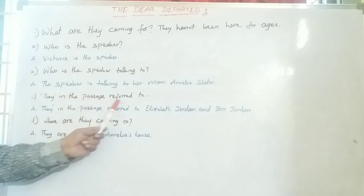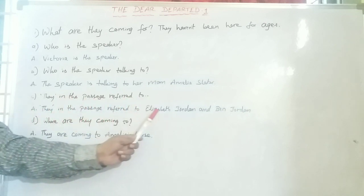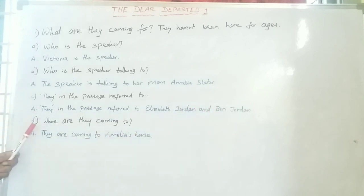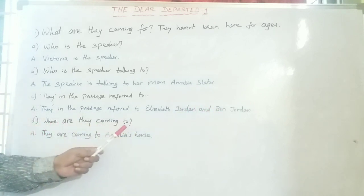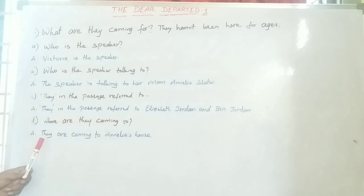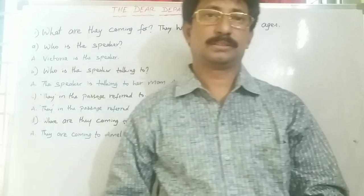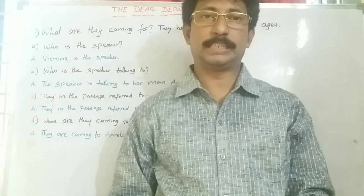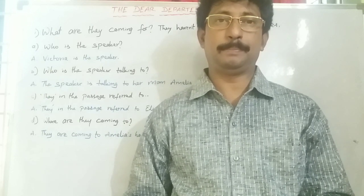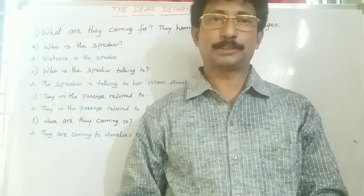Now look at the passage: 'What are they coming for? They haven't been here for ages.' Questions: Who is the speaker? Victoria. Who is the speaker talking to? She is talking to her mom, Amelia Slater. Who does 'they' refer to? Elizabeth Jordan and Ben Jordan. Where are they coming to? They are coming to Amelia's house. This is all about 'The Dear Departed' one-act play. The rest of the play will be covered in the next session. Until then, bye — thanks for watching!